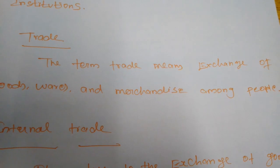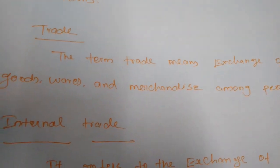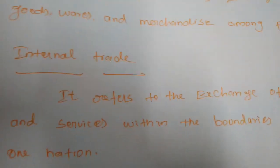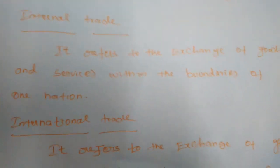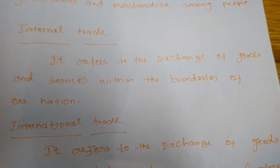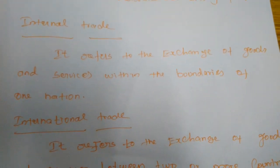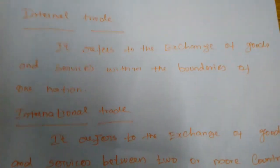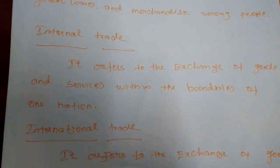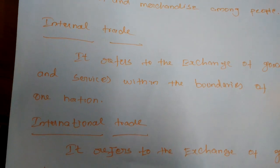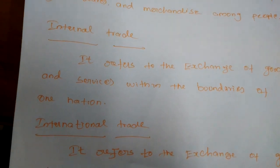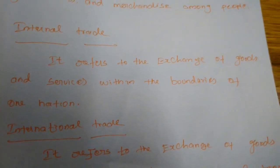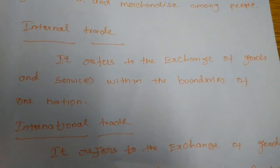Trade can be classified into two types: internal trade and international trade. Internal trade refers to the exchange of goods and services within the political and geographical boundaries of one nation.